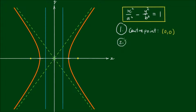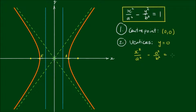Let's have a look at the vertices. These are points where the branches of the hyperbola cross the x-axis. We label these as point A and point A'. Because these points lie on the x-axis, their y-coordinate is equal to 0. Substituting y equals 0 into the standard equation, we have x squared over a squared minus 0 squared over b squared equals 1, which reduces down to x squared over a squared equals 1.